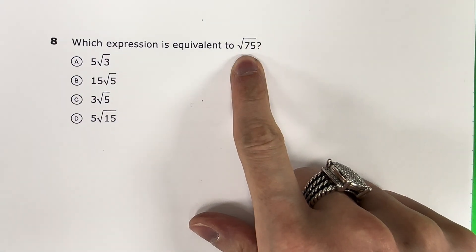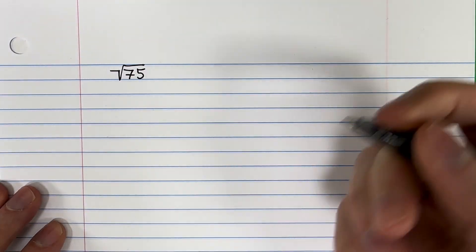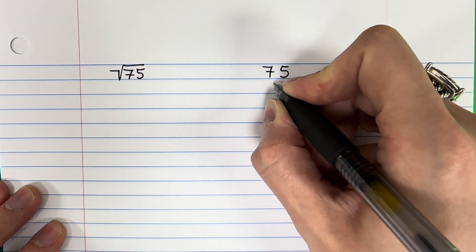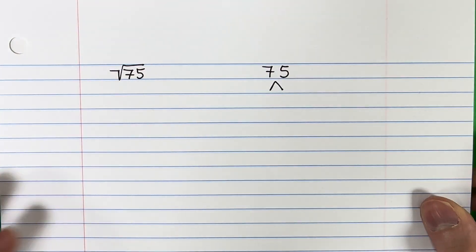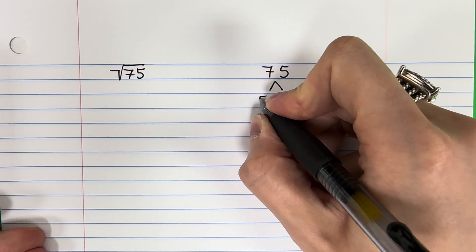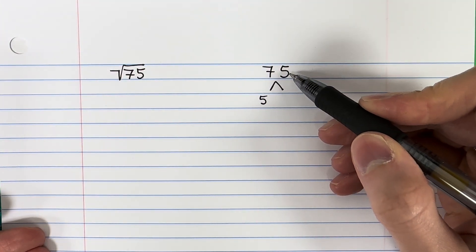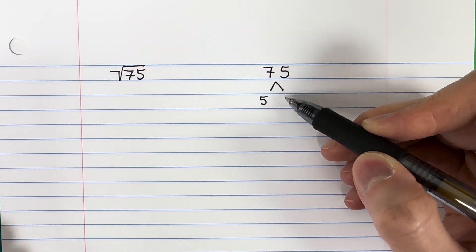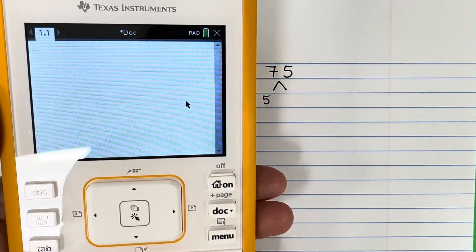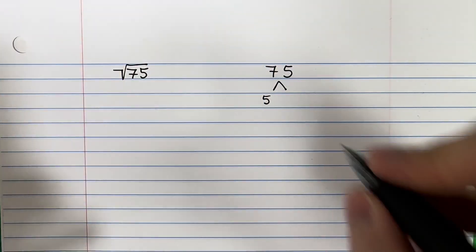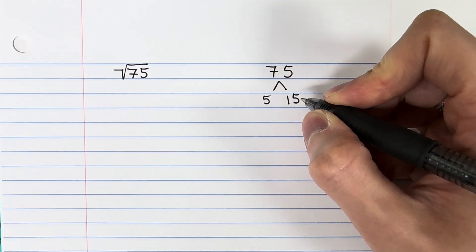I went ahead and copied the square root of 75 over here on my paper. If we're going to do it by hand, the first thing we need to do is make a factor tree. I need to find two numbers that when multiplied together give 75. One of the numbers is obviously going to be 5 because this number ends in 5. So 75 divided by 5 is 15 — meaning 5 times 15 is 75.